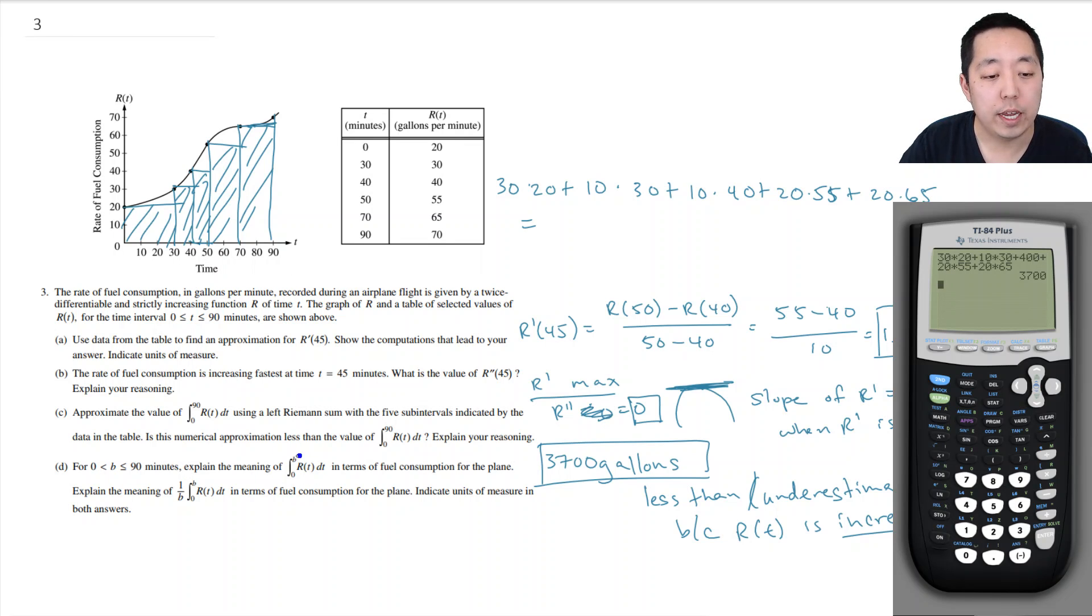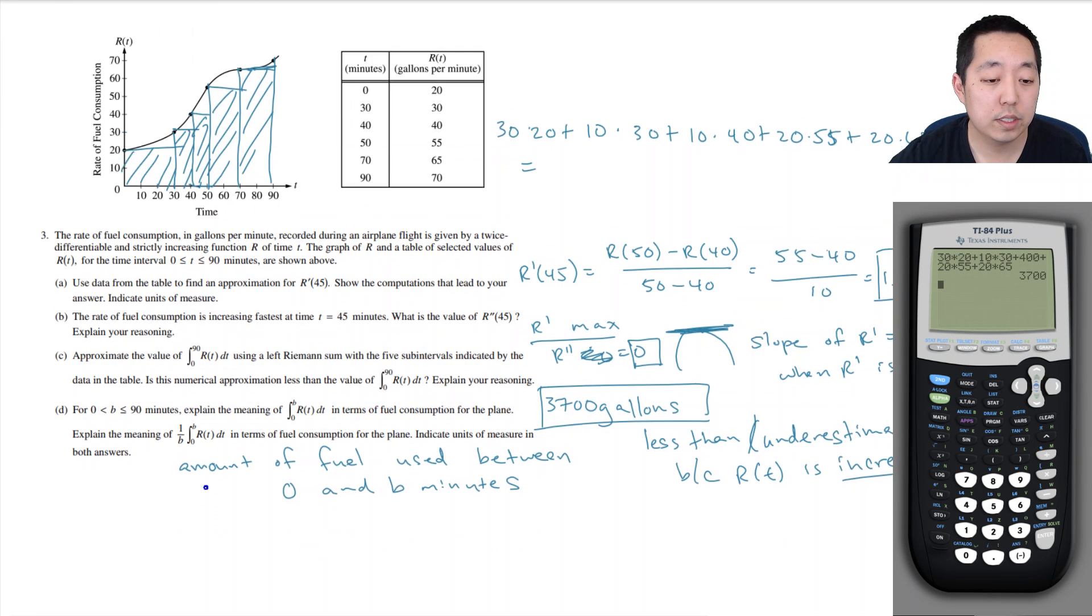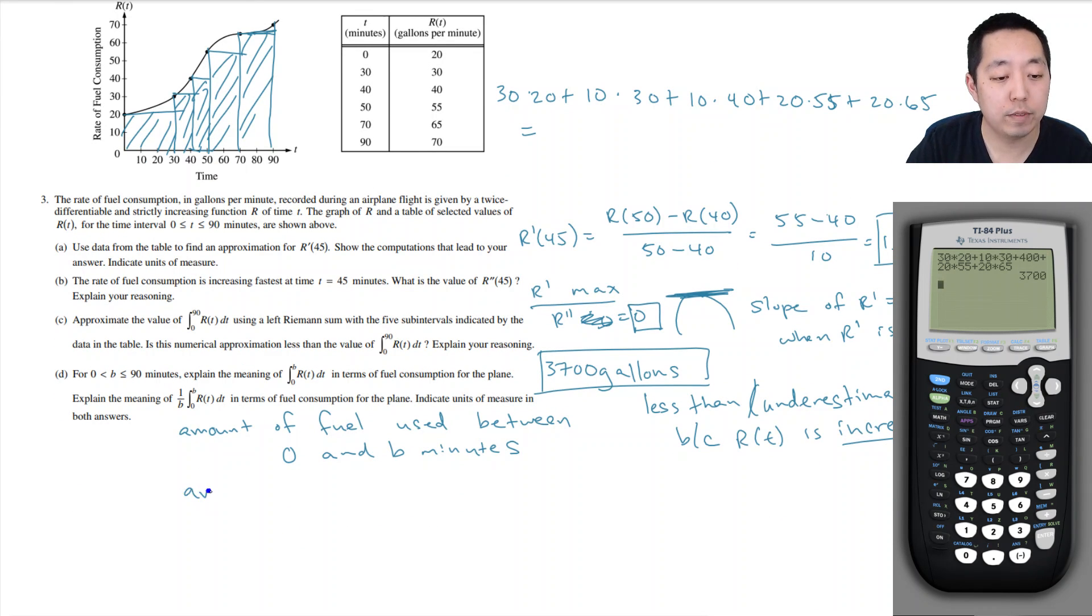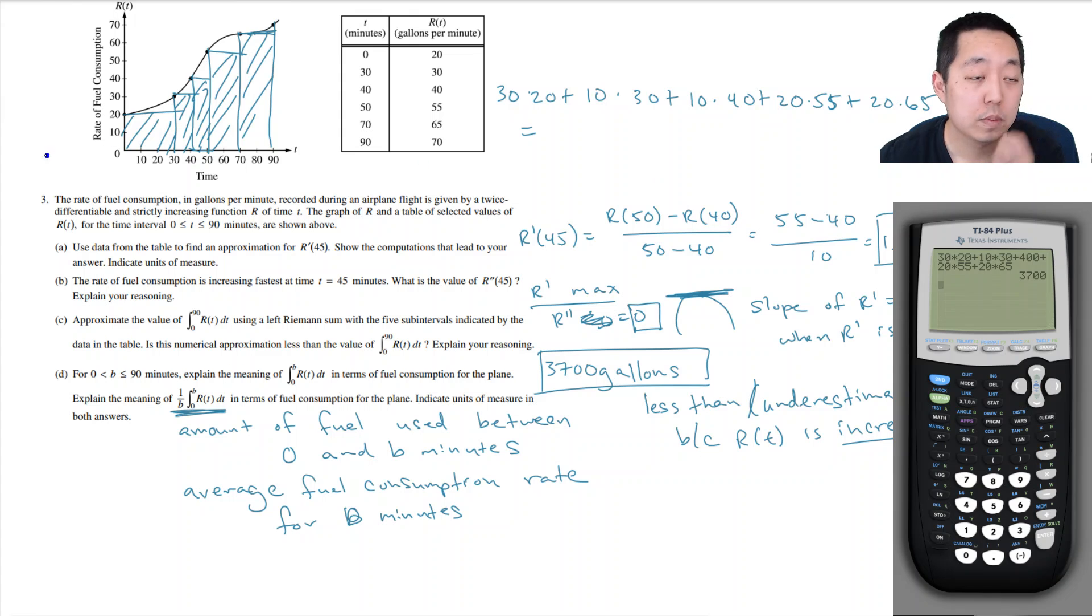Between the minutes, explain the meaning of the area in terms of fuel consumption of the planes. It is the amount of fuel used between zero and b minutes, or b minutes into the flight, I guess. Explain the meaning of this, of the plane. It would be the average fuel consumption rate for zero for b minutes. Because this is the average value, this is the average value formula.